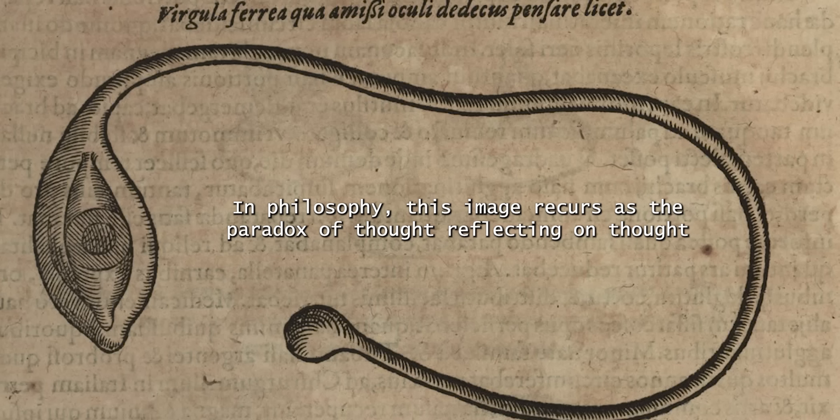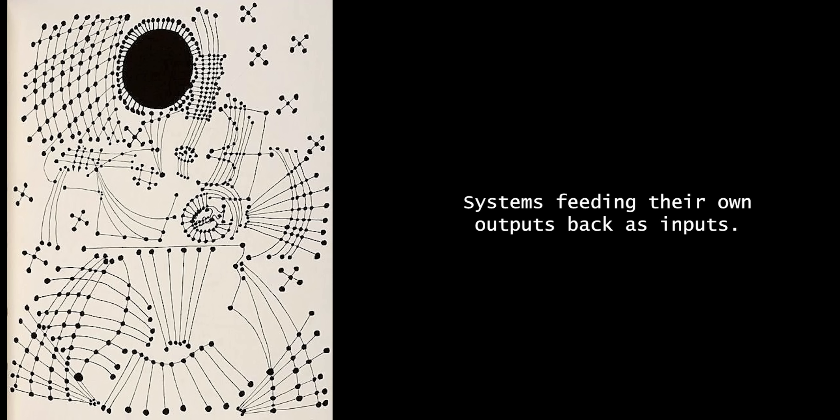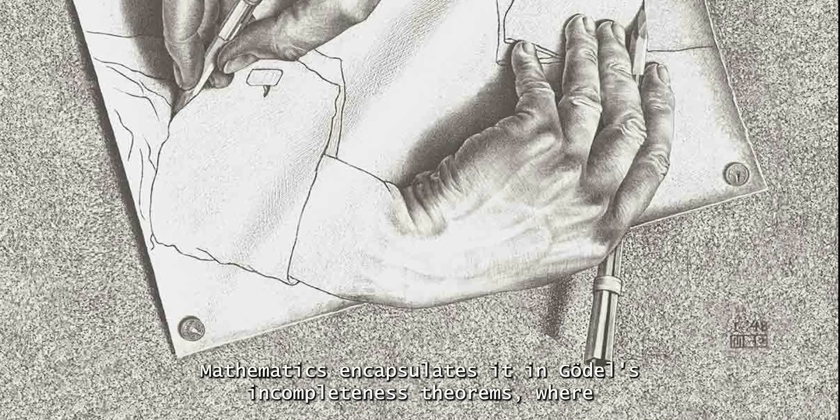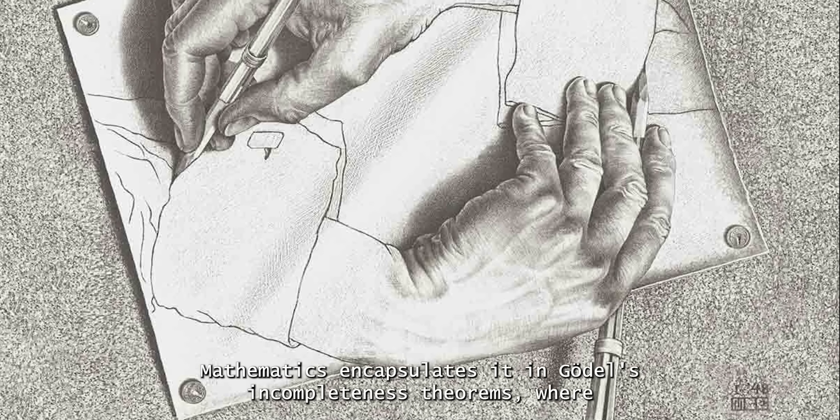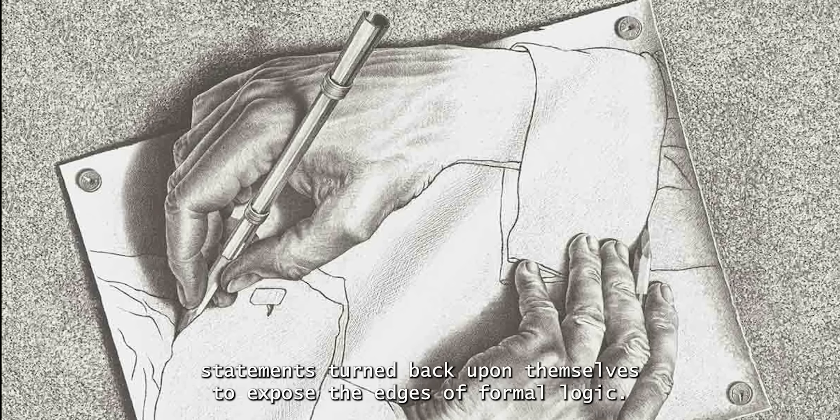In philosophy, this image recurs as the paradox of thought reflecting on thought, language describing language, systems feeding their own outputs back as inputs. Mathematics encapsulates it in Gödel's incompleteness theorems, where statements turn back upon themselves to expose the edges of formal logic.